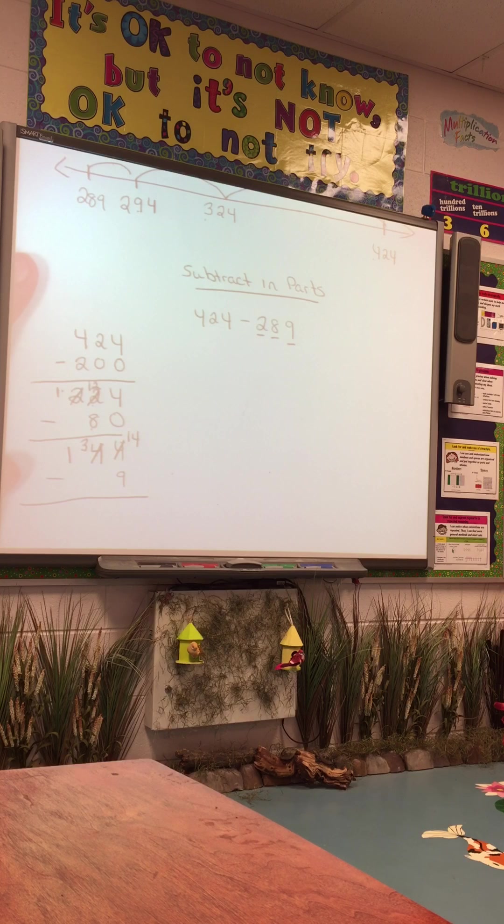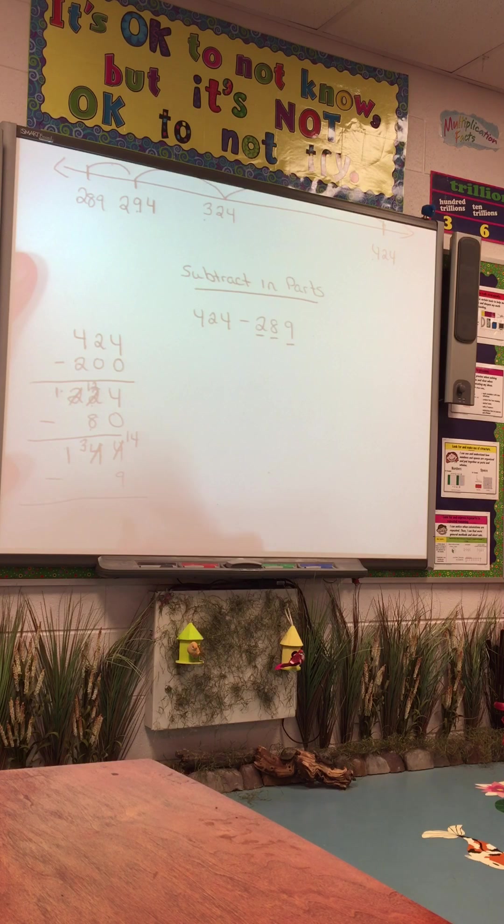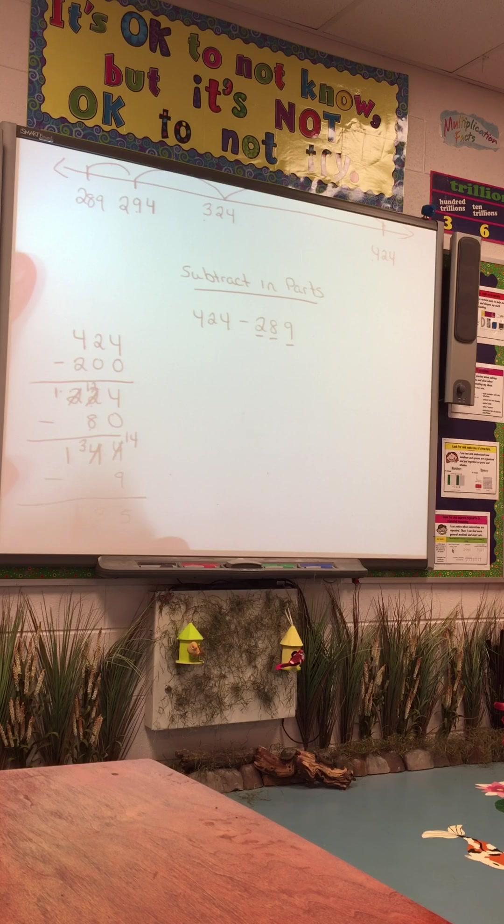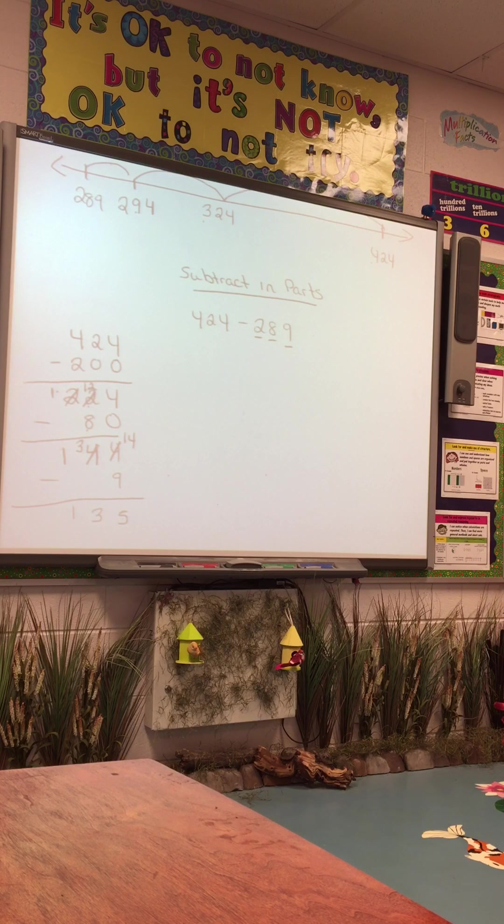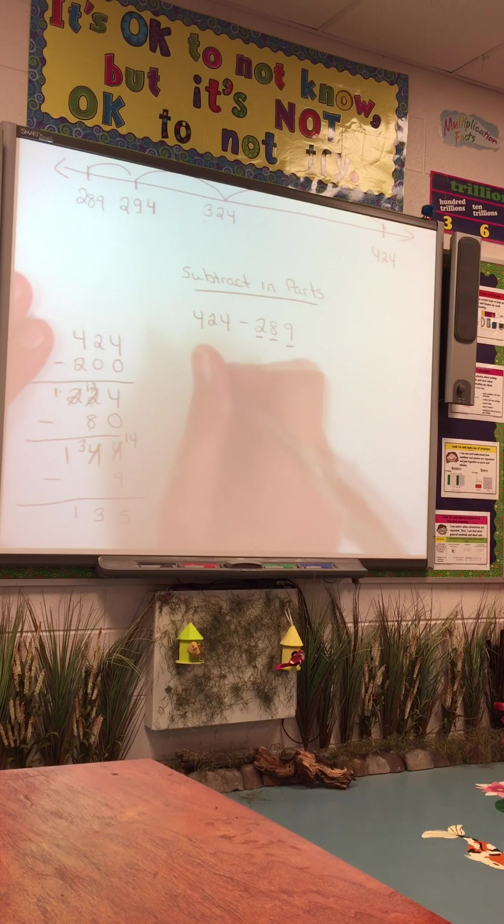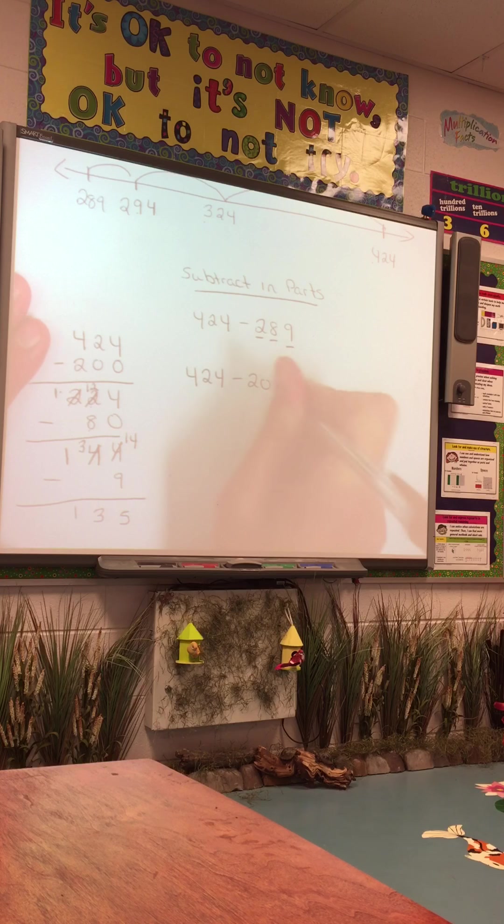I can't take 9 ones from 4 ones, so I'm going to trade 1 of these tens. 1 ten trades for 10 ones, plus the 4 ones I have is 14. 14 minus 9 leaves me with 5. 3 minus nothing is still 3, and 1 minus nothing is 1, so we still get the same difference, 135.